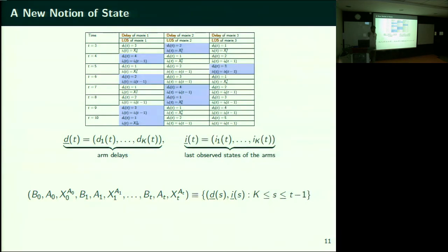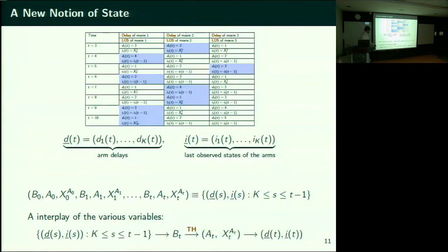So you can compactly represent it via delays and last observed states. There is a BT — all the BTs have to come here too, the past BTs. With this information you make a decision on what BT to look at next, your hand trembles, you look at AT, you end up selecting AT, you get observation XT_AT. Based on that you update your delays and last observed states. Based on this information you select BT, your hand trembles, you select AT, you get observation XT_AT — update last observed states and delays. This keeps going.